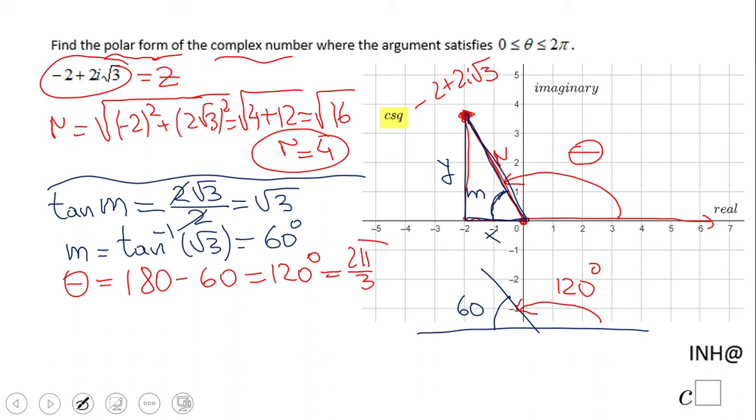And basically now we can write the polar form of this complex number, which would be r which is 4, open a parenthesis, cosine of theta 2 pi over 3, plus i sine of 2 pi over 3.